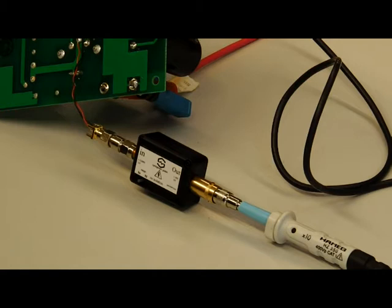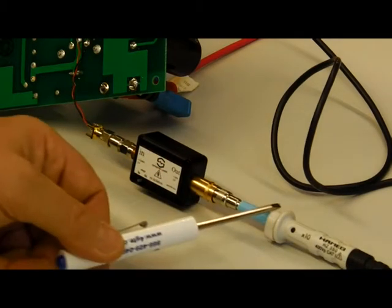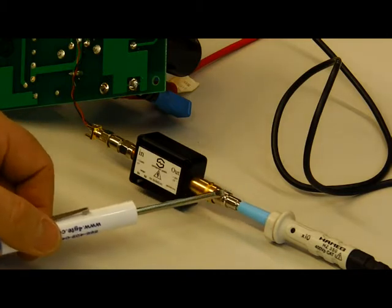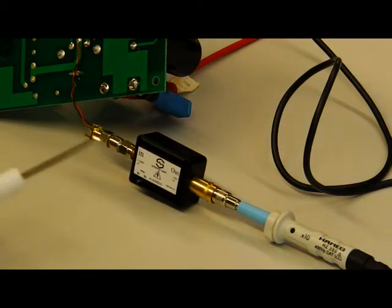So now we have the full test setup. We have the 10 to 1 scope probe with the BNC to scope probe adapter. And then we have the clipper. The clipper has no galvanic isolation. So of course, the voltage on the output can be dangerous.